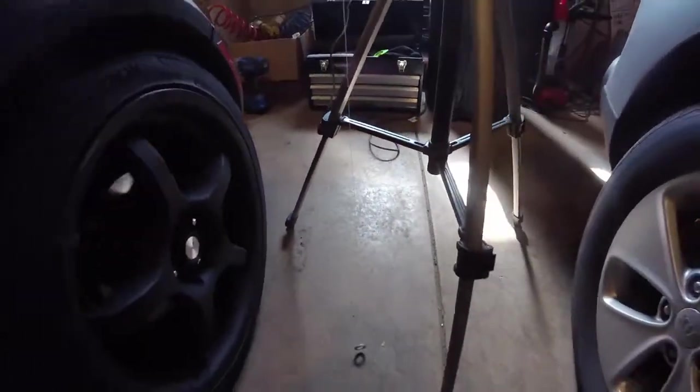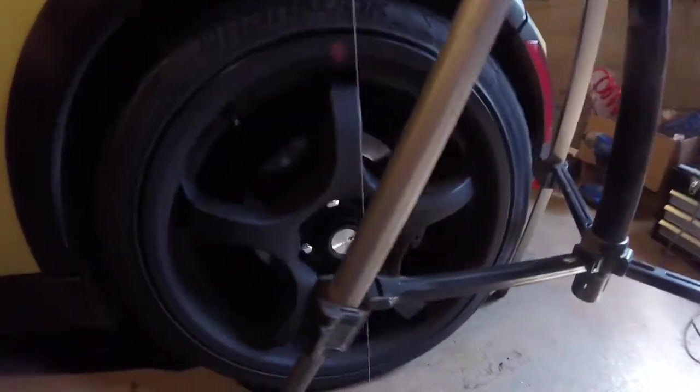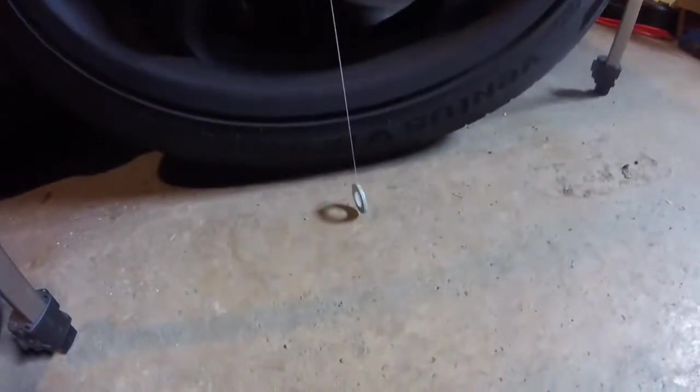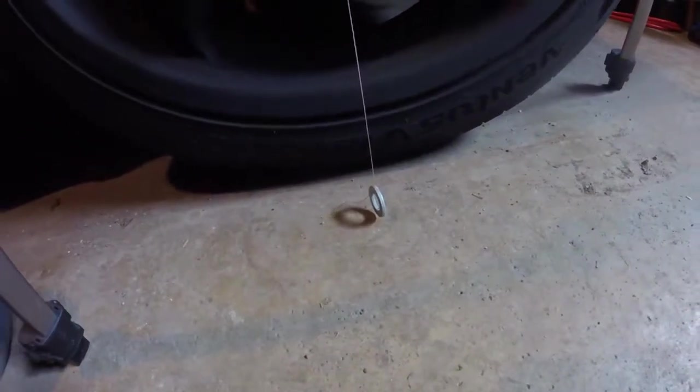When we position this string hanging down, we want to make sure it's going right through the center line of our wheel like I show here. The closer you can get to the center line the better. You want to be measuring the lowest low and the highest high point on your wheel.